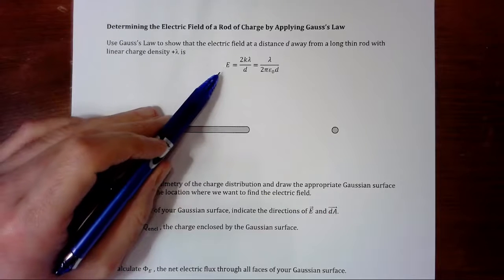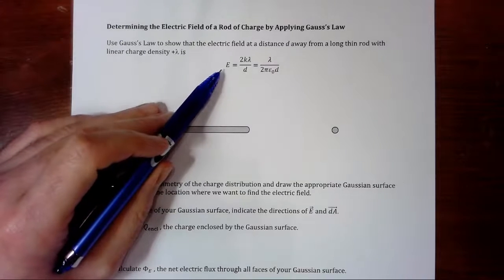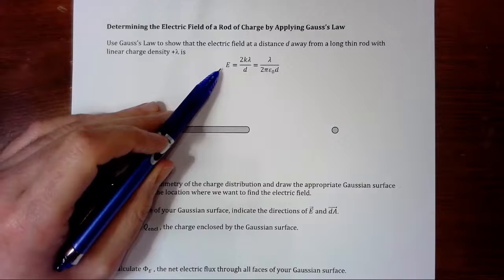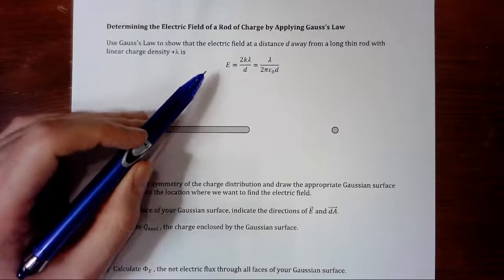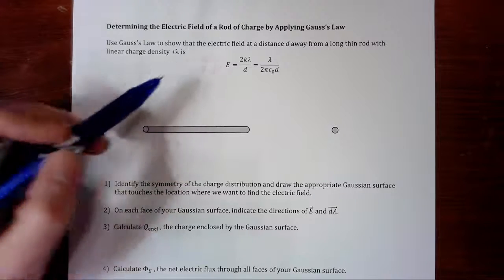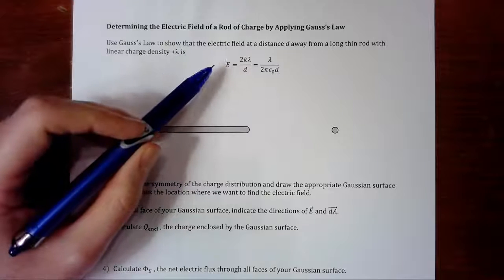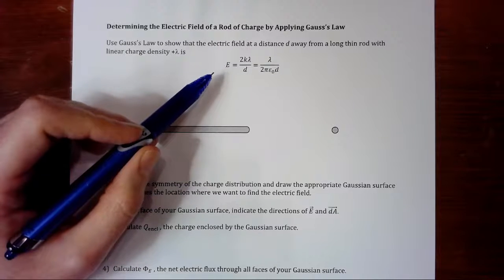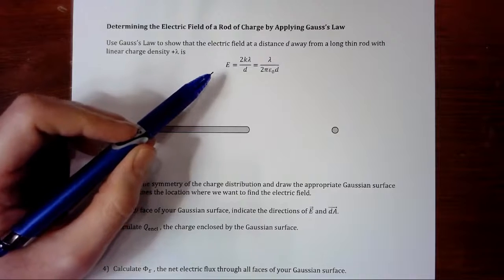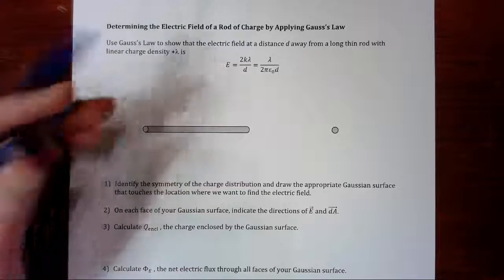We have already done this a few units ago and figured out that that was the equation. We did a lot of integration and it was kind of messy. In this case, we're going to use Gauss's Law and it's going to be a lot easier and a lot more elegant. So let's see how it's done.